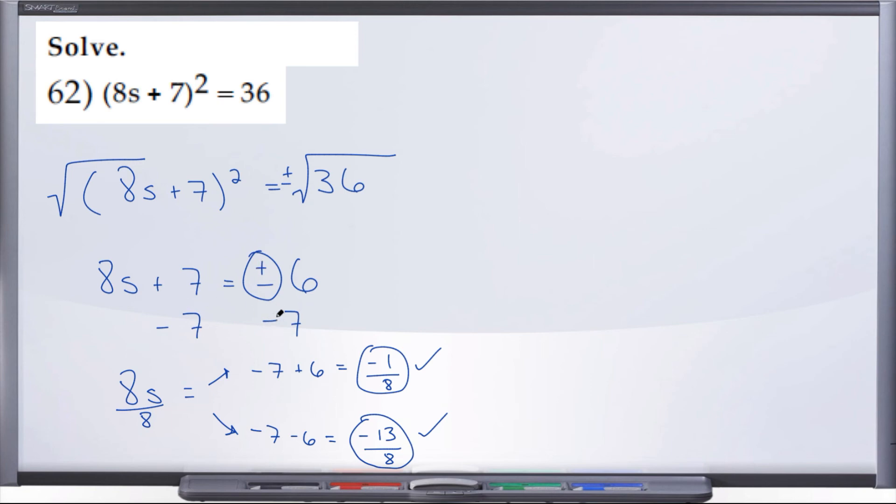we create two answers for ourselves, negative 7 plus 6, negative 7 minus 6. And then when we divide by 8, we end up with negative 1 over 8 and negative 13 over 8.